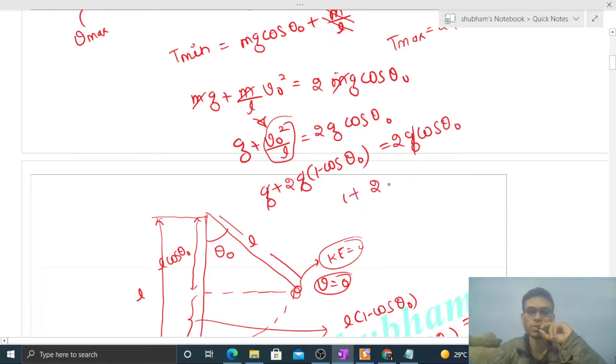So cos theta naught equals 3 by 4. So the amplitude, that is theta naught, will be cos inverse 3 by 4.